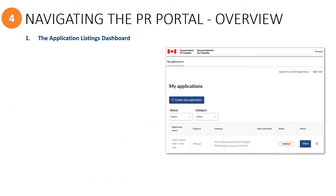The permanent residence portal navigation for private sponsors is divided into four pages. The first one is the application listings dashboard, which is the first page you will see after you have signed in. You will notice that there is a button here for creating a new application.